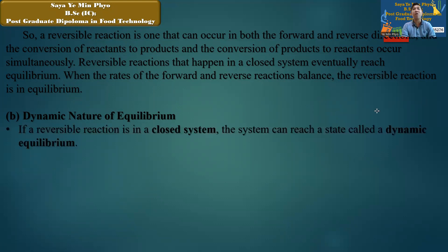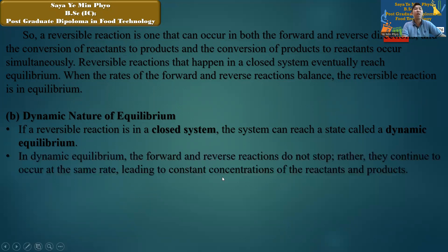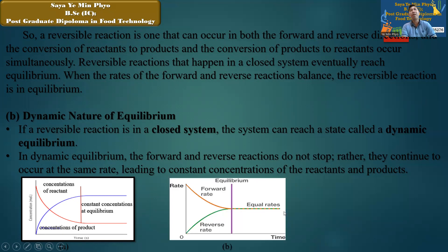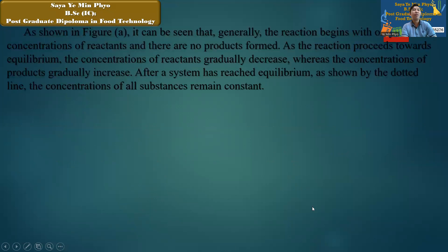In a closed system, a reaction can reach a state called dynamic equilibrium. At dynamic equilibrium, the forward and reverse reactions do not stop; rather, they continue to occur at the same rate, leading to constant concentrations of the reactants and products.